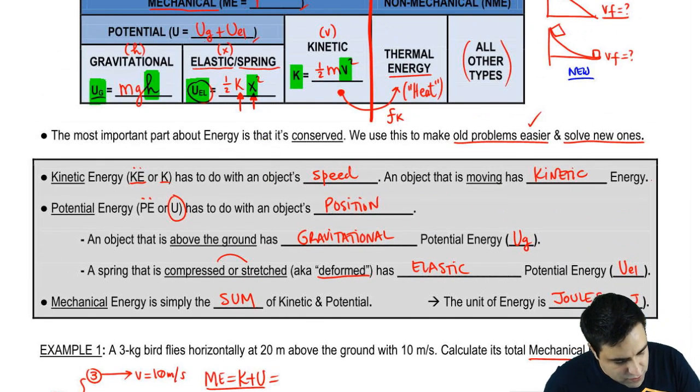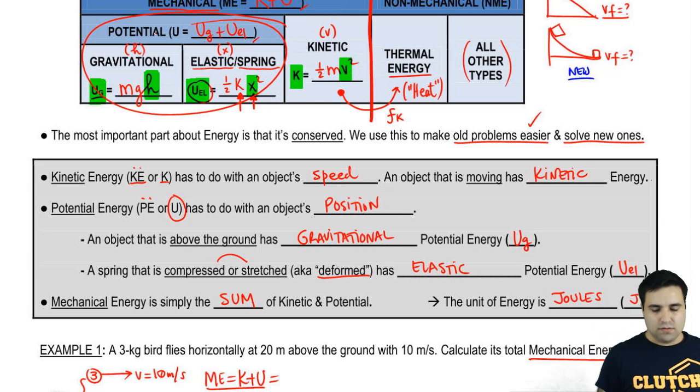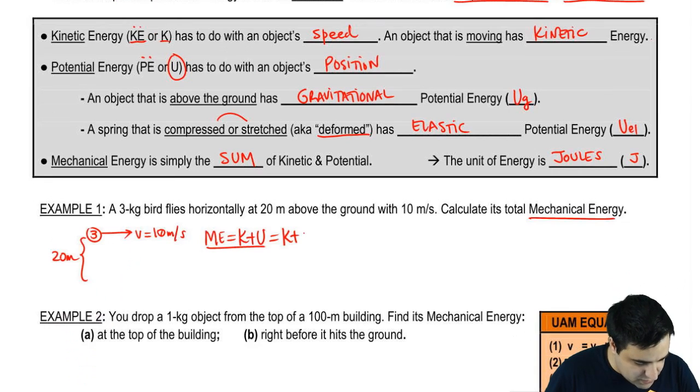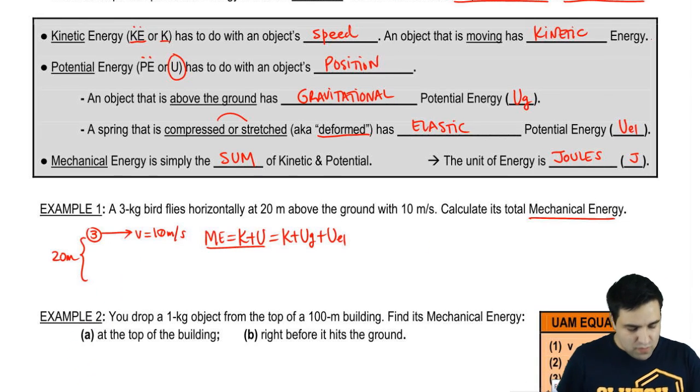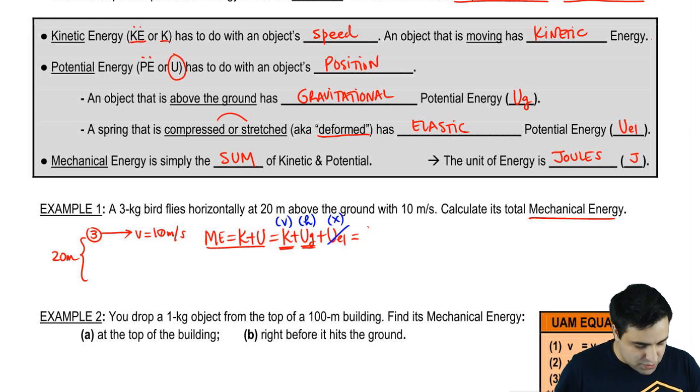Kinetic energy right here. It's the total K, which is this guy, plus U, and U is both of these together. So if you want, you can expand this. It's K plus UG plus UEL. How do you know which types of energies you have? Well, this one depends on a V, this one depends on an H, and this one depends on a spring compression X. There are no springs around, so I don't have this. I have a velocity, so I have a kinetic energy. I have a height, so I have a potential energy. And now it's just plug and chug.